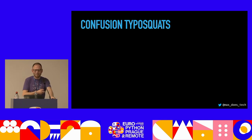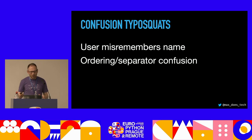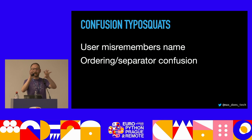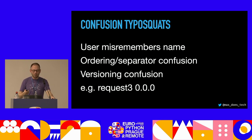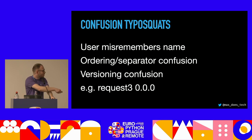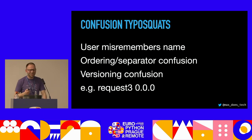There's another type: confusion typosquats, where the user might misremember the name, mess up the order of words, or get the versioning wrong. For example, requests 3.0.0.0 — a piece of malware I actually saw on PyPI. If you saw this, you might think, oh, it's like a beta version of the new requests v3. Don't install that. That was malware.